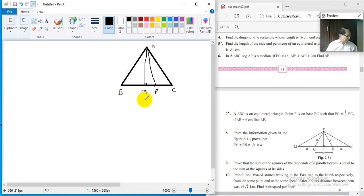This is the situation between B and C, P is in between. You are given that PC is 1 upon 3 BC. Draw segment AM perpendicular to BC.